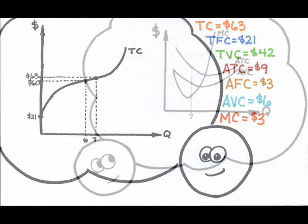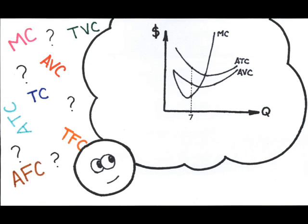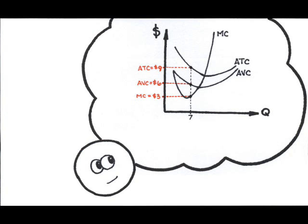Now, what about the average cost diagram? Can I get total cost, total fixed cost, total variable cost, and all the rest of them? Let's take the easy ones first. I can read average total cost, $9, average variable cost, $6, and marginal cost, $3, straight from the diagram. What about the rest?